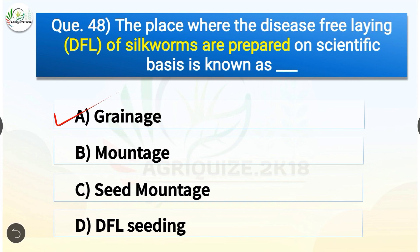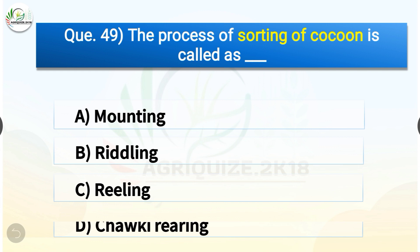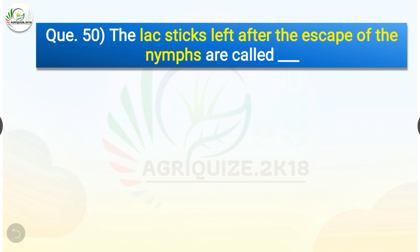Question number forty-nine: The process of sorting of cocoons is called what? The options are: mounting, riddling, reeling, or chalky rearing. The correct answer is option B — riddling. The process of sorting of cocoons is called riddling.